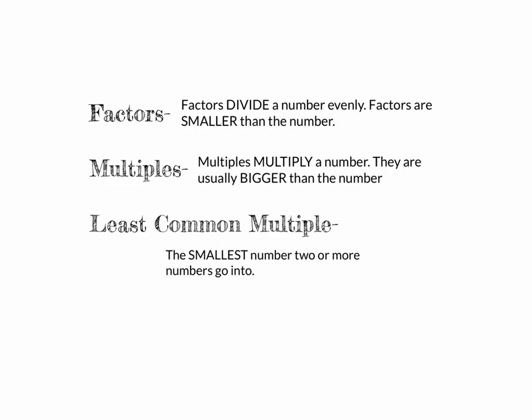Our main concept for this lesson is least common multiple. Breaking it down: 'least' means smallest, 'common' means you need two or more numbers to compare, and 'multiple' refers to what they can both multiply and make. So, the least common multiple is the smallest number that two or more numbers can both multiply to produce.